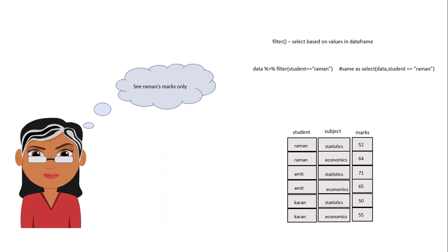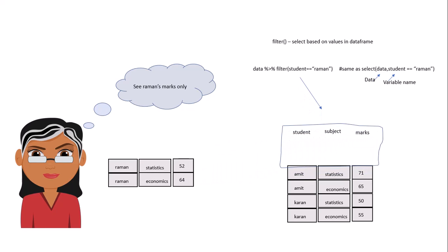Now suppose you want to filter based on a value — you can do that using the filter function. Suppose you want Raman's marks only; for that you use the filter function. The syntax is: first give the data frame as an argument, then give the variable name with the condition. We want the value 'Raman' inside the student column — this is a conditional statement. When you run this, it selects that row and returns it as a table.